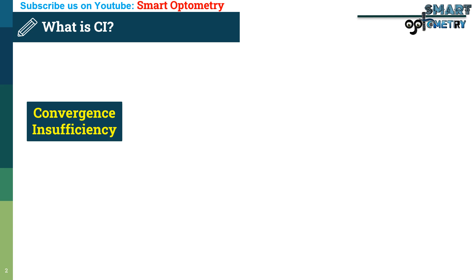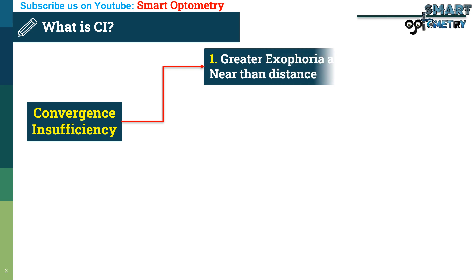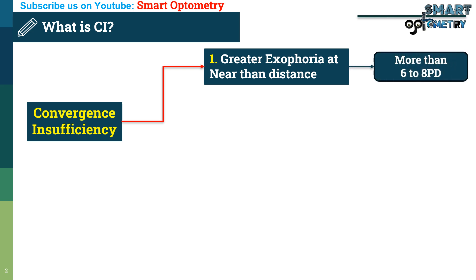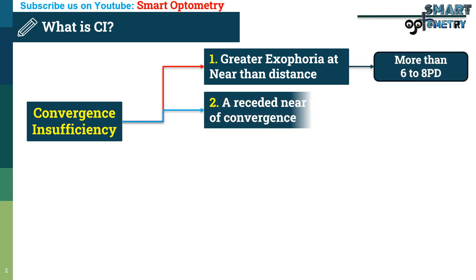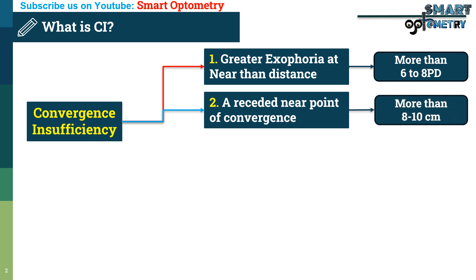Convergence insufficiency is a condition in which there are: 1. Greater exophoria at near than distance — the difference between near and distance exophoria is more than 6 to 8 prism diopters. 2. A receded near point of convergence, greater than 8 to 10 cm.